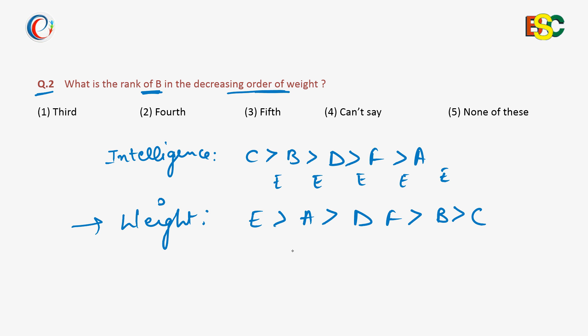Since this is the decreasing order, you have to tell the rank: one, two, three, four, five. Yes, the rank of B is five according to the decreasing order. Option number three is the correct answer to this question.